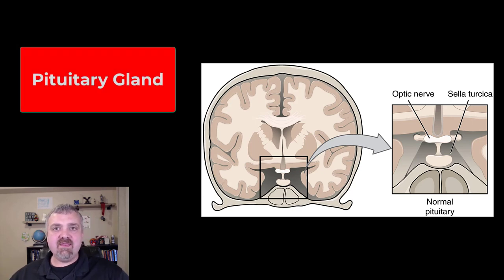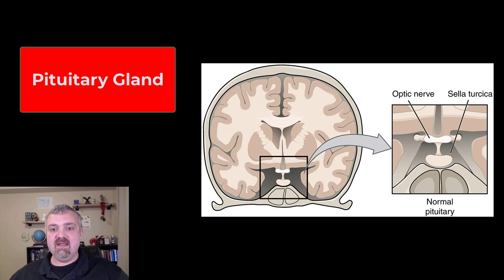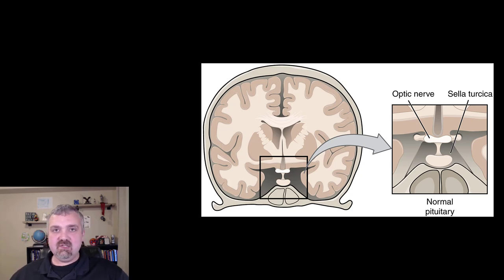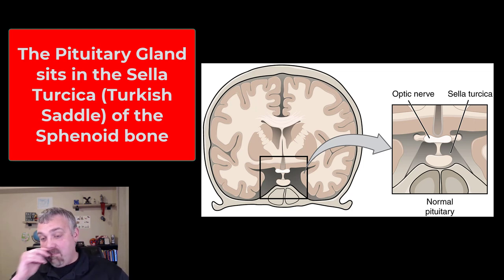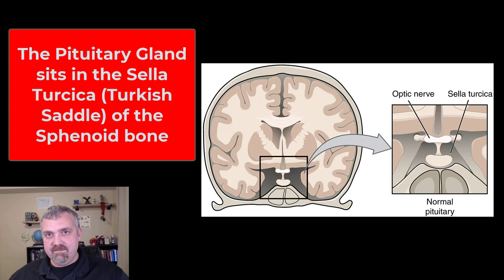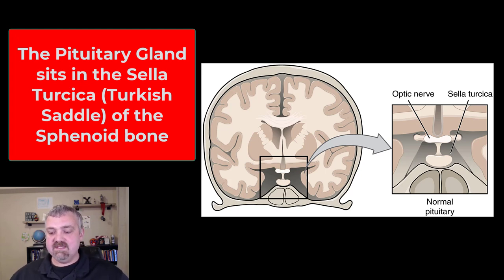Hey everybody, Dr. O. We're going to talk more about the pituitary gland, because it is the master gland and the most important endocrine gland that we have. First, its location: the pituitary gland is below the hypothalamus, right there in the diencephalon region. Where it sits is in the sella turcica, or Turkish saddle, of the sphenoid bone — hopefully you remember that from when we covered the skeleton.